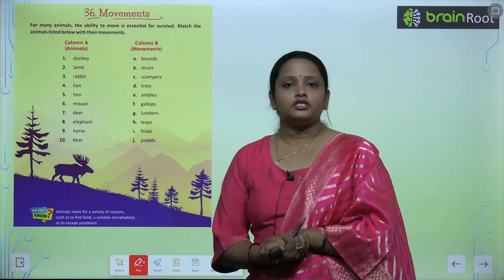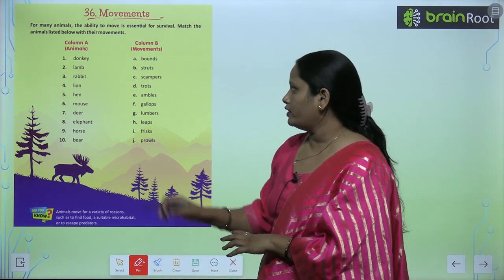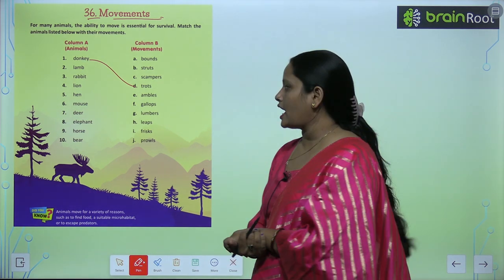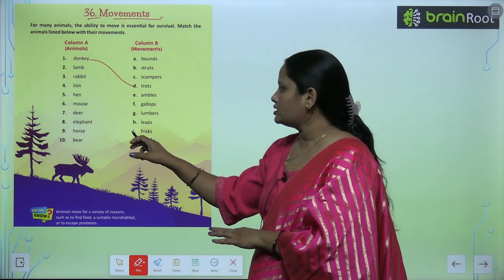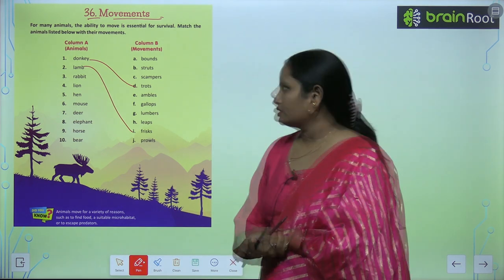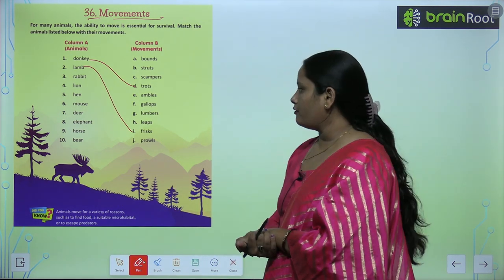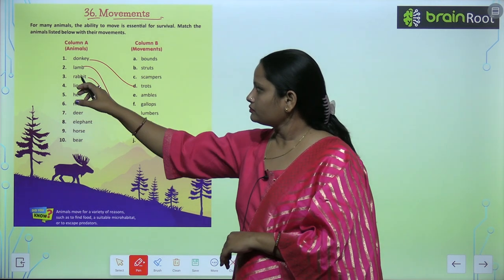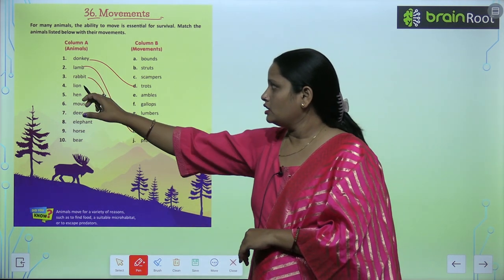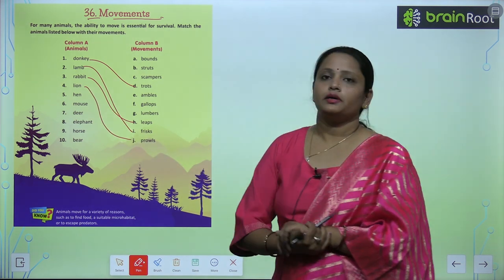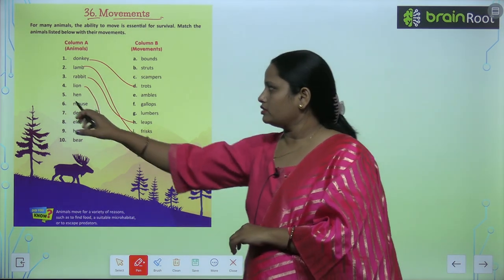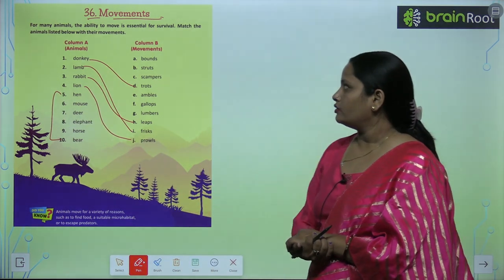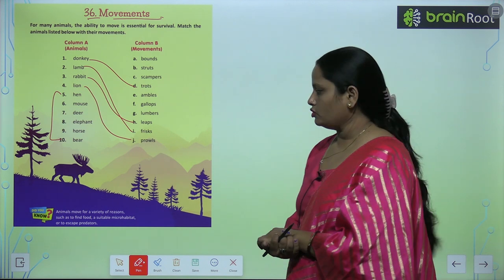The first animal is donkey and donkey always trots. Next is lamb — lamb always frisks. Next is rabbit — rabbit always leaps. And lion always prowls. So similarly children, find out the movement of these animals and write it here. You have to match them.